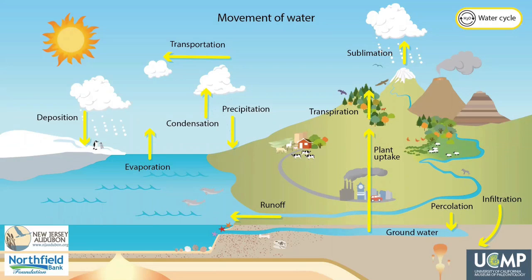The water cycle, or the movement of water through the Earth system, shapes the land, atmosphere, and biosphere. The cycling of water is important because water is essential for all living organisms, transports heat, and itself is a greenhouse gas.